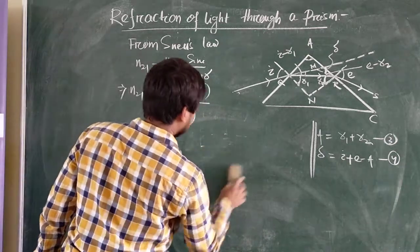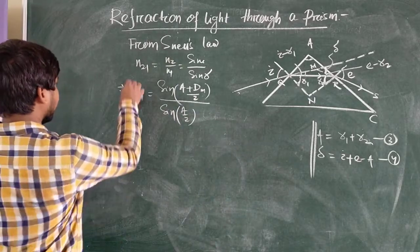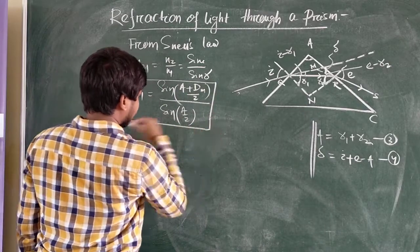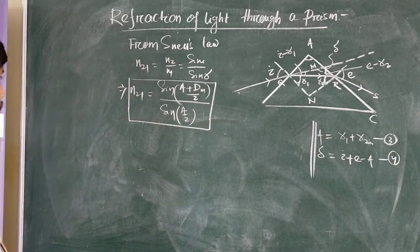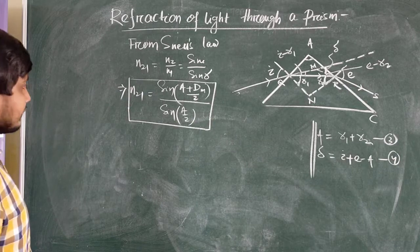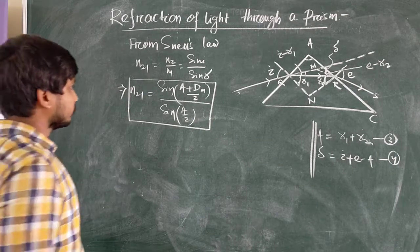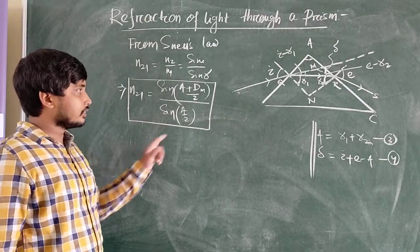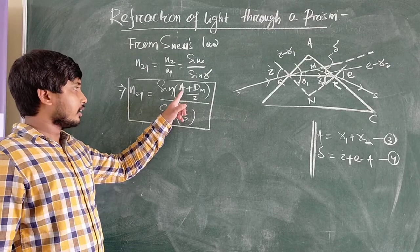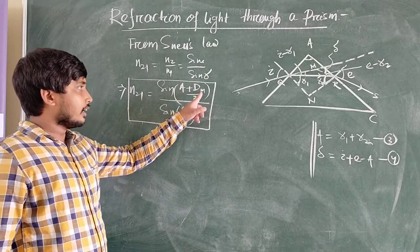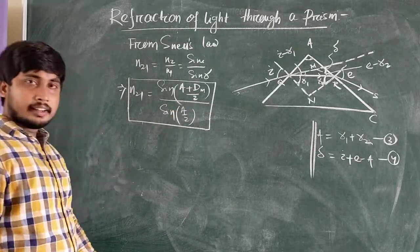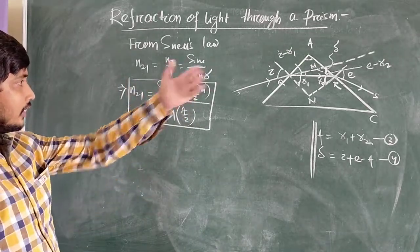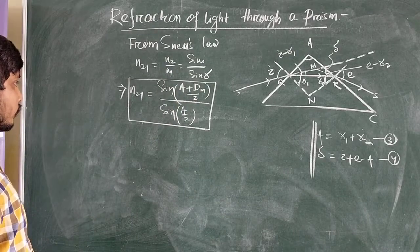Substituting our values, n21 equals sin((A + Dm) / 2) divided by sin(A / 2). This is the required expression to find the refractive index of the material of the prism, where A is the angle of the prism, Dm is the angle of minimum deviation, and n21 is the refractive index of the prism material with respect to the outside medium.